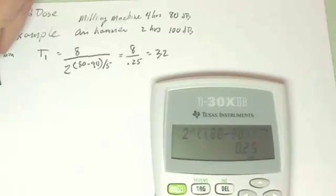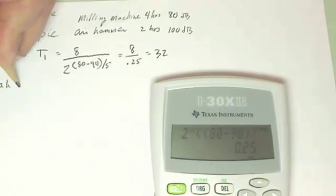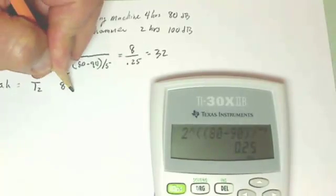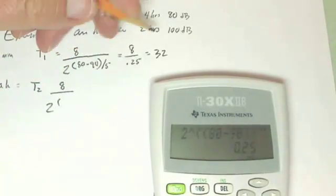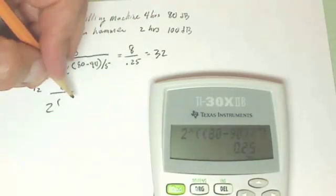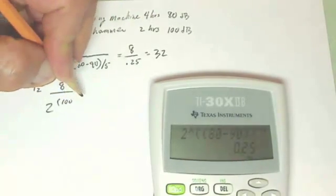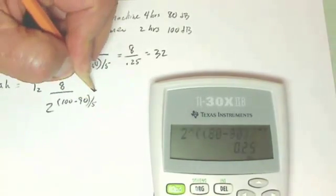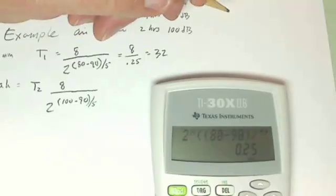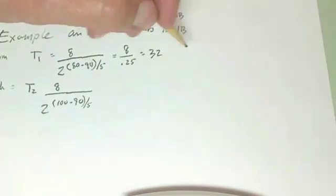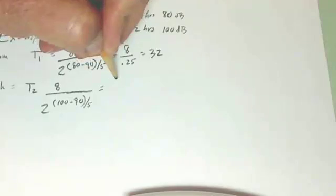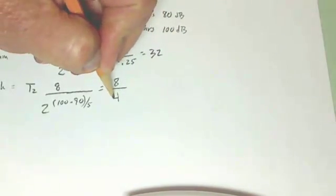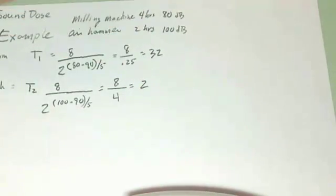For the next example, it's the air hammer, and that's T2. T2 is the same type of formula, 2, and in this case, we're going to put 100 in here. So we have 100 minus 90 divided by 5. Hopefully you know how to run the calculator on that one, and I come up with 8 over 4, and that's going to be equal to 2.